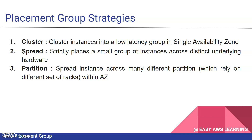Spread is the second type of strategy. It spreads instances in small groups across the underlying hardware — not relying on a single availability zone but spread across distinct underlying hardware. The key point is it strategically places small groups of instances across all distinct underlying hardware to reduce hardware failure risk.